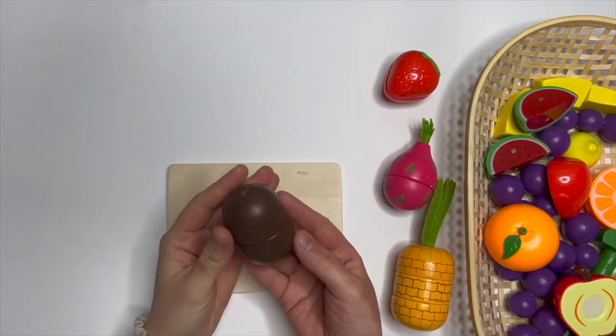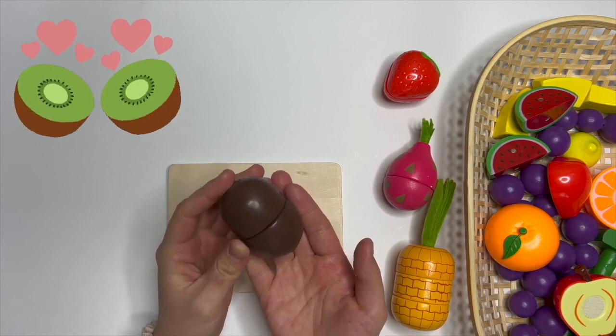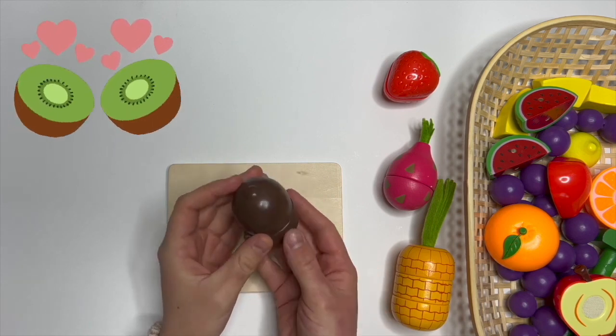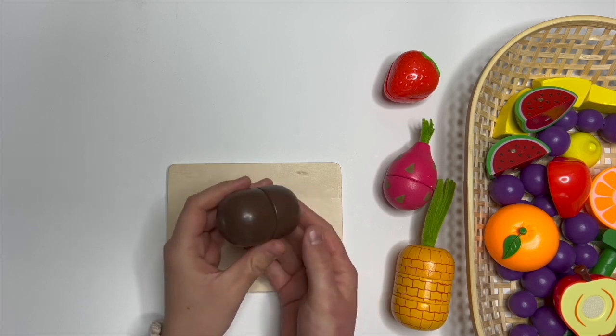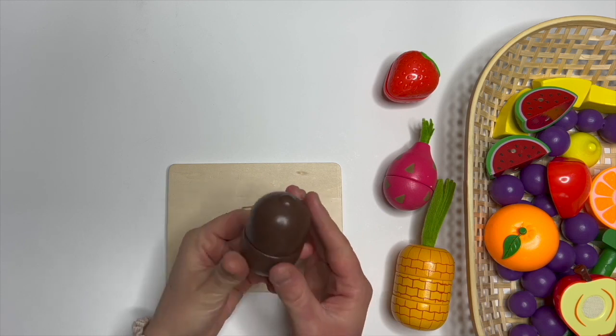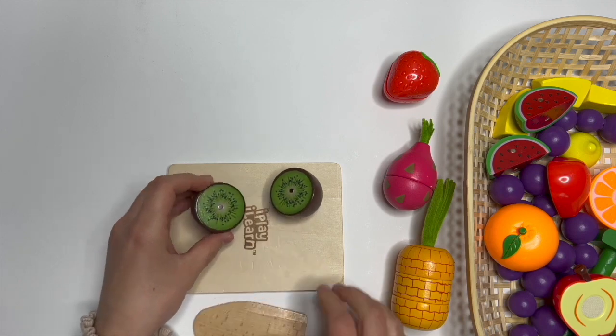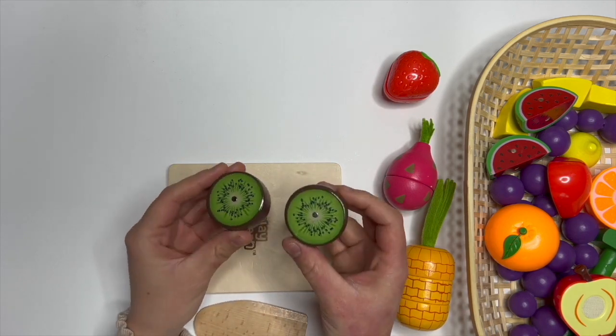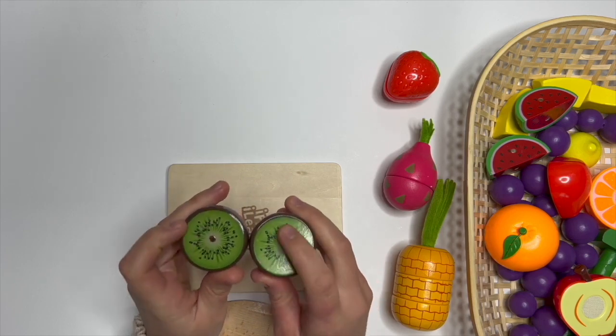Our next fruit is this one. This is kiwi. Kiwi is another great fruit. It has a lot of vitamins like vitamin C, vitamin K, and vitamin E. Kiwi is brown in the outside, but when we open it, look at that. It's green. It's green and it has these black seeds.